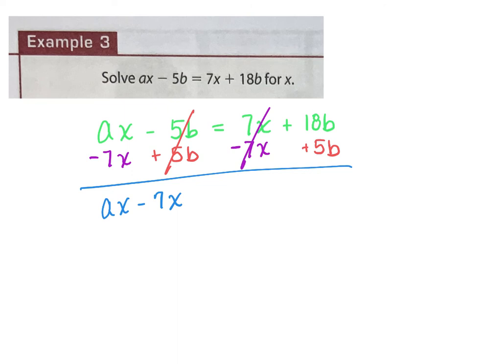On the right-hand side, I have 18B and 5B. How many B's do I have? 23B.